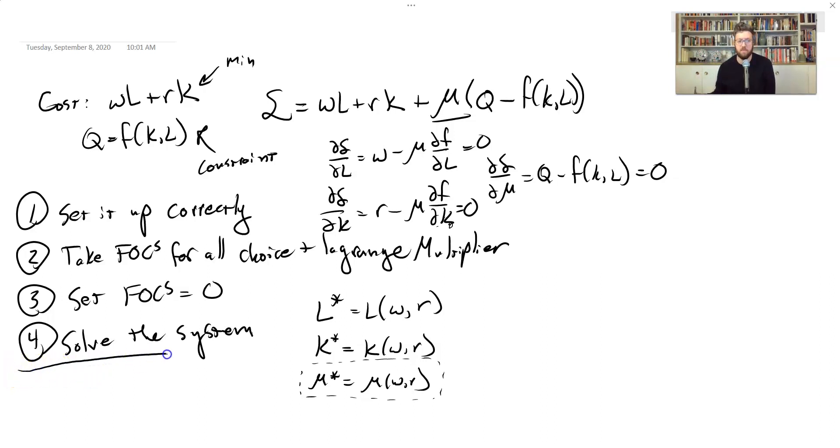Now, normally for solving the consumer's problem about how much to consume, we're done. But if we're trying to find the cost function, we have to add a fifth step here, which is to use the results to plug the solutions back into our cost function. And what do I mean is, because remember the goal here is not to figure out how much capital and labor we want. The goal is to figure out what's the cost to produce Q. There's another variable here, Q. That's really important.